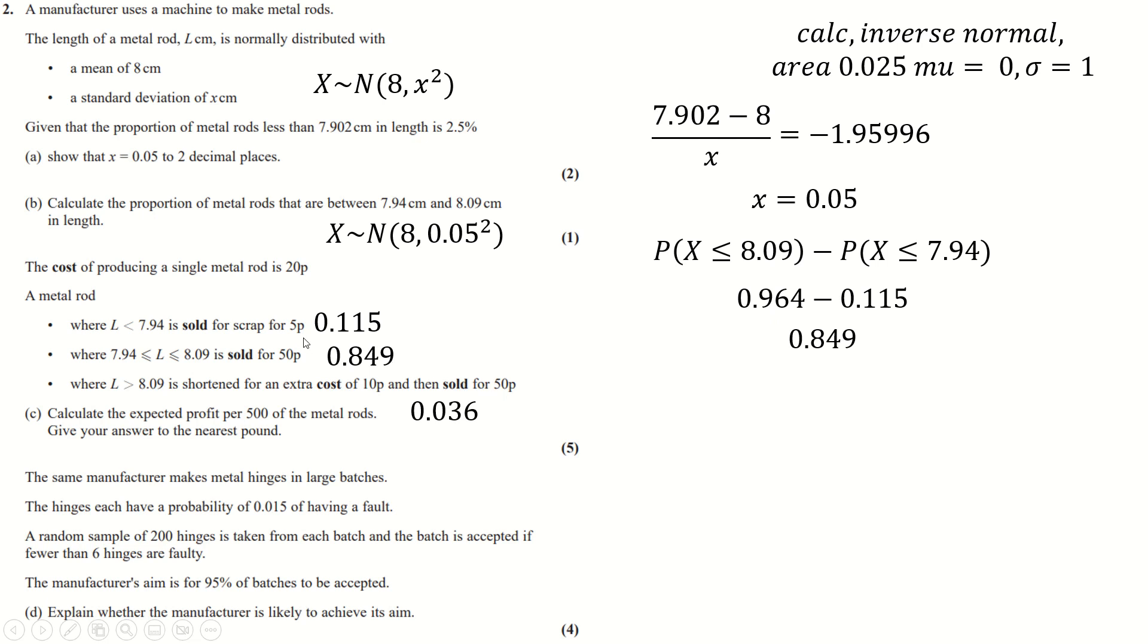So our total profit will be 5 pence times the number of these that we expect, which is this times 500, plus 50 pence times how many we expect to be here, which is this times 500, plus 40 pence, which is the profit from this, times this times 500 to see how many of those we get, which makes total profit this.